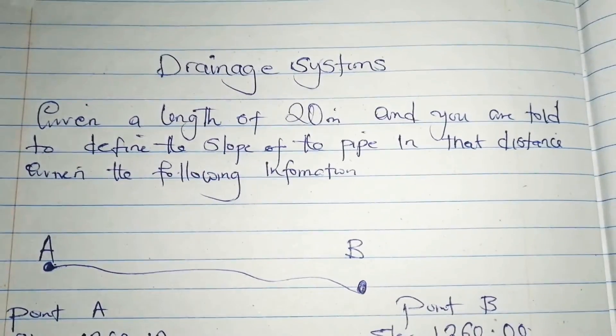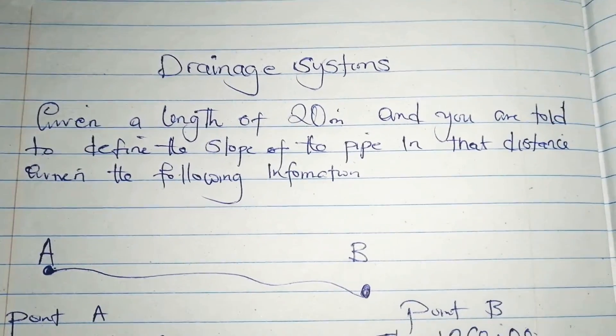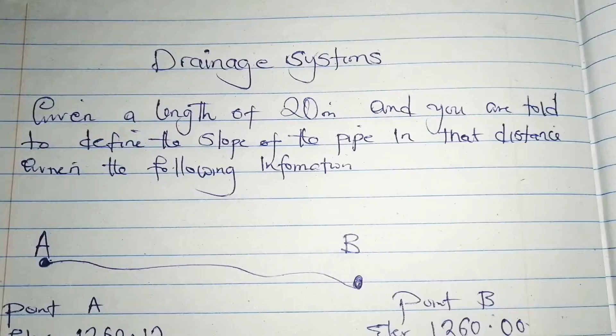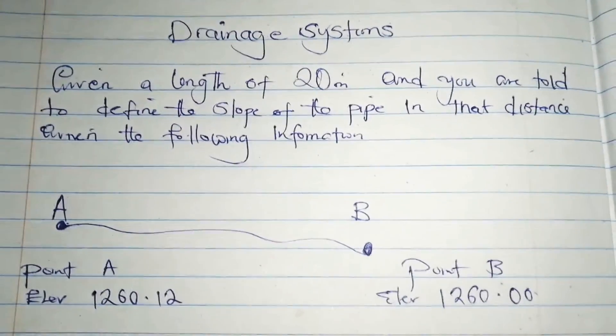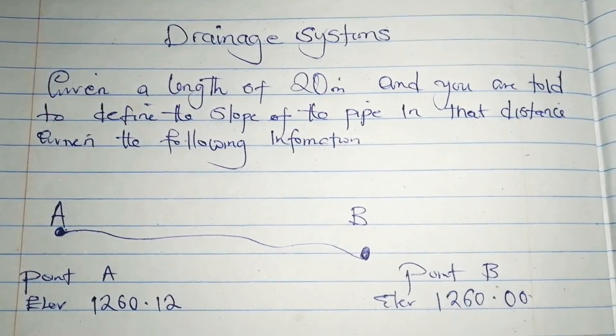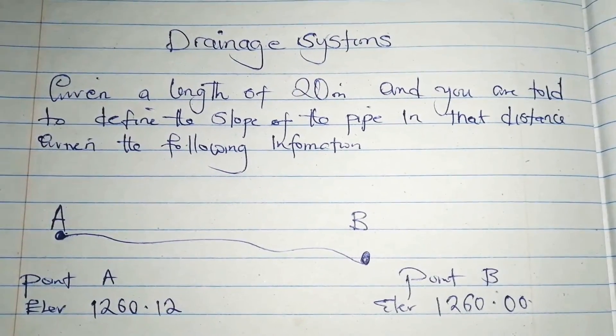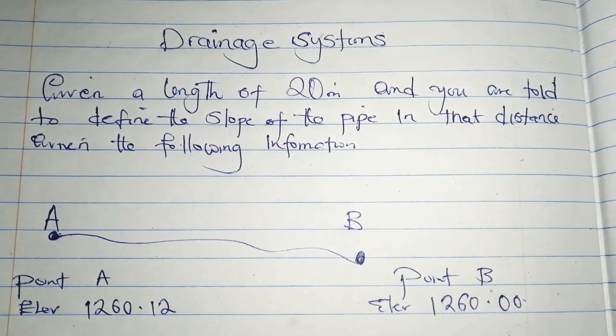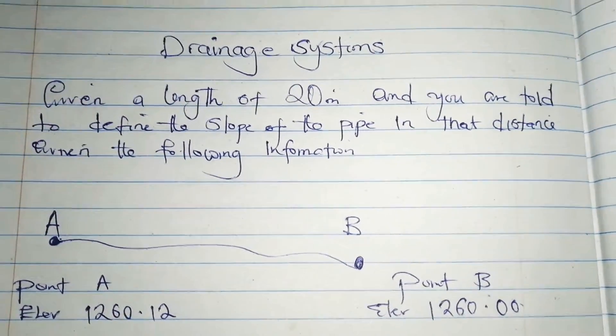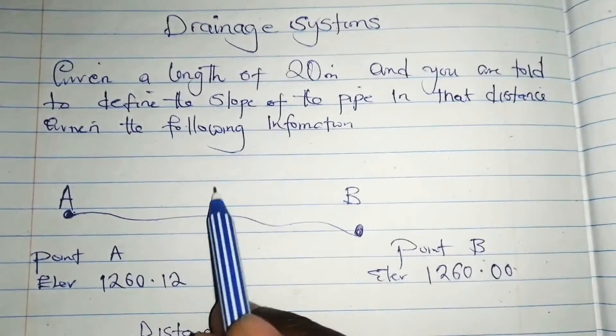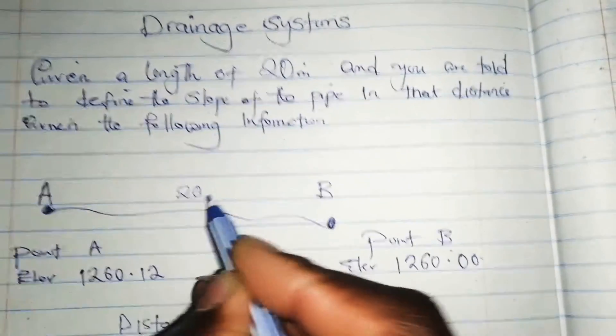First of all, what I want us to look at today is the slope of the drainage. So maybe you are told you have point A and point B, of which point A is at an elevation of 1260.12 and point B is at an elevation of 1260.00.